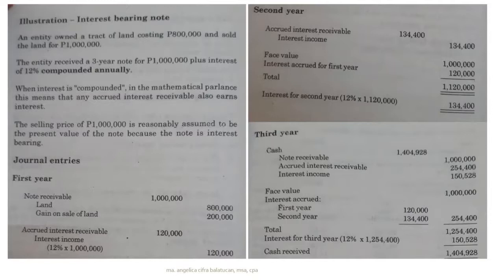If it is simple interest, you multiply 10% by the original principal of 100 every year — that's always 10. The interest will not be added to the principal, so there is no new principal. The principal stays at 100 every year. So in year one, interest is 10; year two, interest is 10; year three, interest is still 10 under the simple interest method.